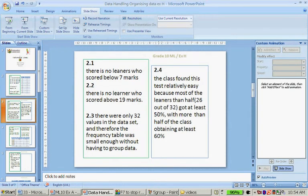Why was the actual marks used and not the intervals? There were only 32 values in the data set and therefore the frequency table was not small enough without having to group the data. Plus, there's only 20 different marks that you could score. If the test was out of 200, it would have been a different situation.